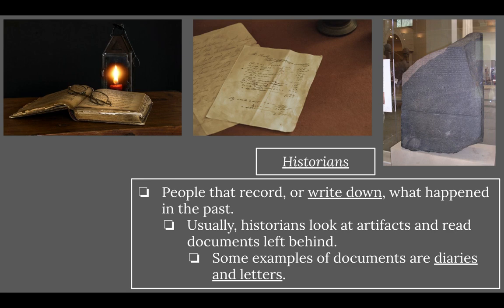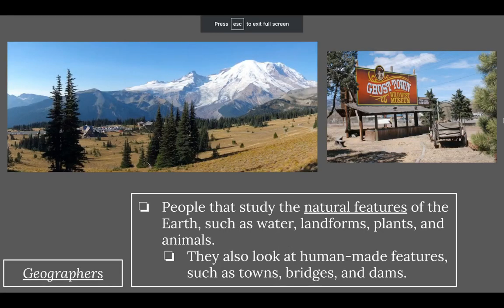Historians would study written records and write down their thoughts in books, articles, and papers. They're trying to understand why events happened the way they did.